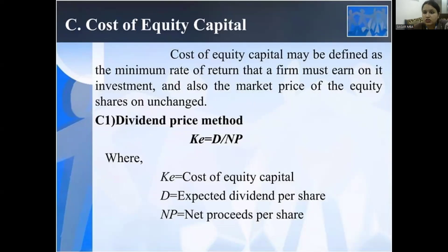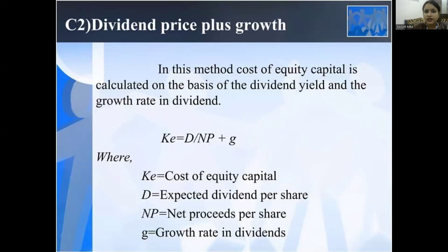Cost of equity shares: the cost of equity capital may be defined as the minimum rate of return the firm must earn on its equity investment so that the market price of equity shares remains unchanged. Dividend price approach: KE equals D divided by NP, where KE is the cost of equity capital, D is the expected dividend per share, and NP is the net proceeds per share. Dividend price plus growth approach: since equity shares fluctuate in market price, KE equals D divided by NP plus G, where G is the growth rate in dividend.